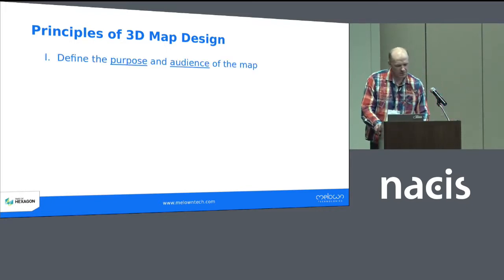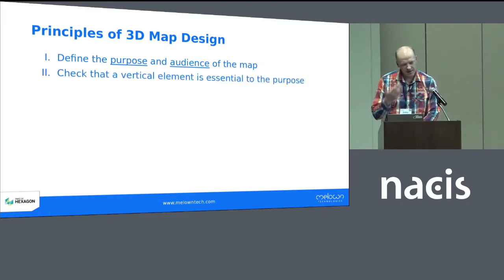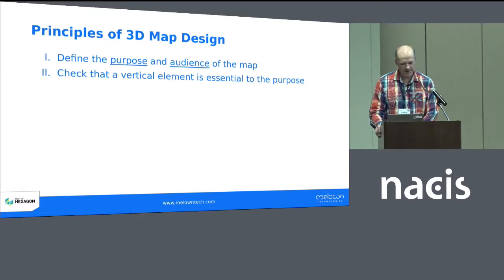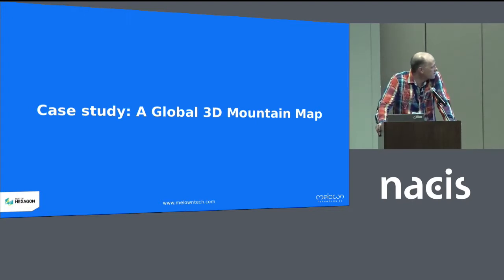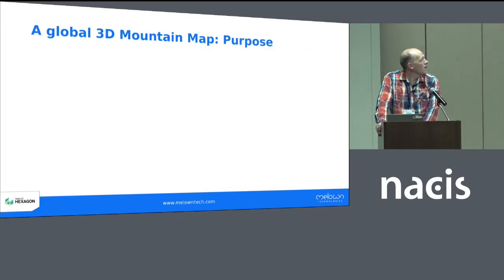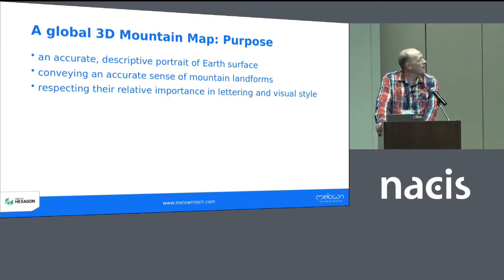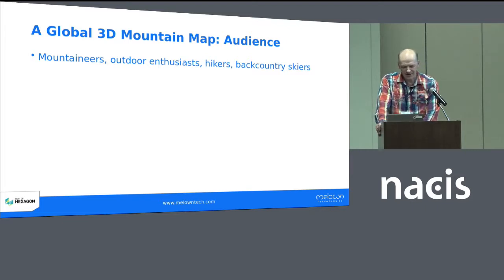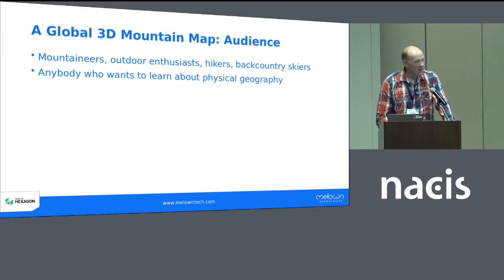Applying this better approach, we can arrive at something I call the principles of 3D map design. First, we define the purpose and audience of the map. Second, we check that the vertical element is essential to the purpose — that's very important; if that condition is not fulfilled, you might be better off doing 2D mapping. And third, we design a visual hierarchy which is consistent with the purpose. The rest of this talk is a case study — an application of these principles — for a global 3D mountain map. The inspiration comes from pictorial information boards you can find on observation platforms around the world, shown here in the mountains of Switzerland and in the Appalachian Mountains of New Hampshire. The purpose of our map is to provide an accurate descriptive portrait of Earth's surface, conveying an accurate sense of mountain landforms and respecting their relative importance in lettering and visual style. The audience is mountaineers, outdoor enthusiasts, hikers, backcountry skiers, or simply anybody who wants to learn about the physical geography of the Earth.